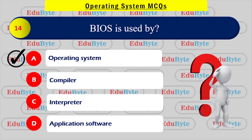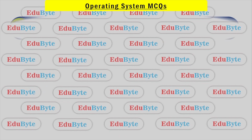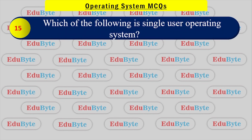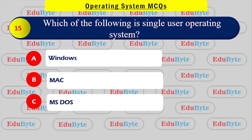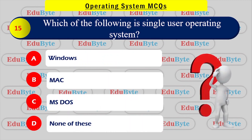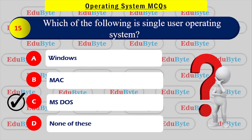Which of the following is a single-user operating system? Options: Windows, Mac, MS-DOS, None of these. The correct answer is MS-DOS, which is a single-user operating system.